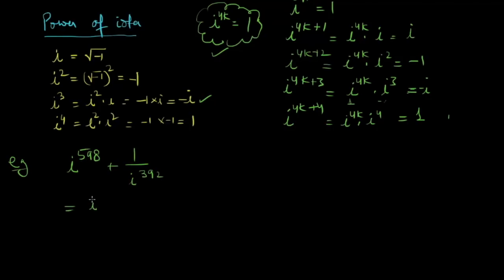iota raised to power 4 into, 4 times 149 is 596 and plus 2 remainder. 1 upon iota, 4 times 98.